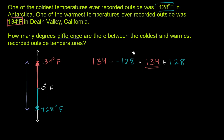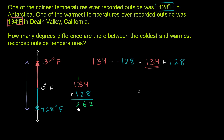So we can now figure out the answer. 134 plus 128: 4 plus 8 is 12, carry the 1, and 1 plus 3 plus 2 is 6, giving us 262. So the answer is 262 degrees Fahrenheit difference between the coldest and the warmest recorded outside temperatures.